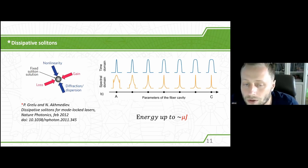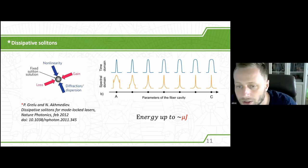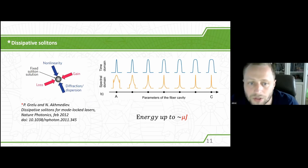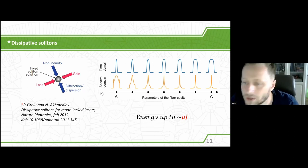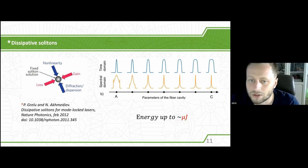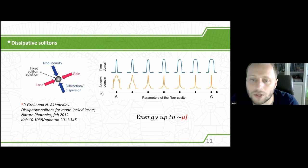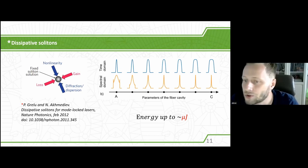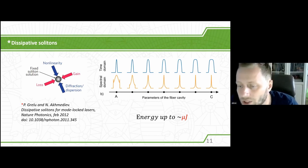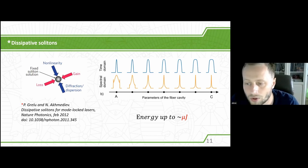Unlike solitons where only nonlinearity and dispersion stabilize the pulse, in dissipative solitons, dissipative effects — gain and losses — also play a role. In the scope of applying artificial intelligence, this type of pulse is quite attractive because it is very flexible. It doesn't have the strict limitation of classical solitons. By changing the parameters of the laser cavity, you can get an arbitrary value of the time-bandwidth product, and the energy of dissipative soliton sources may exceed microjoule levels.